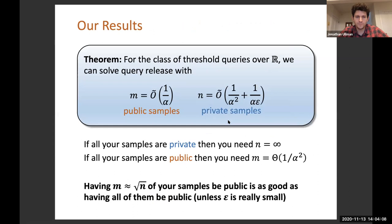Let me describe at a very high level what our results are. For this example of threshold queries or computing the CDF, what we show is that if you're given enough private samples where enough is about 1 over alpha squared and just a small fraction of public samples, so just 1 over alpha public samples, then you can privately release threshold queries over an infinite domain.